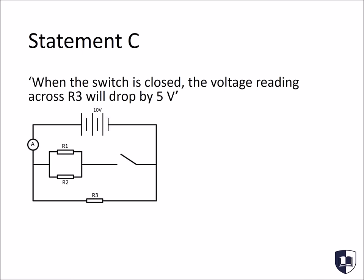We can now go back and look at statement C, and see why it must be incorrect. When the switch is open, the circuit is a simple series circuit. You know the voltage across the cell is 10V, so the voltage across R3 will also be 10V. When you close the switch, you turn the circuit from a series into a parallel circuit. But remember, the voltage across each branch will be the same as the voltage of the cell. So as such, there will be no change in the voltage across R3. It will remain at 10V with the switch closed.